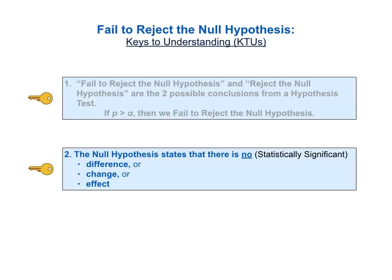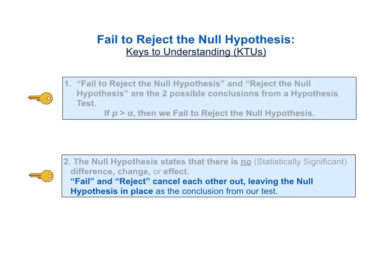Here's the first part of key to understanding number two: the null hypothesis states that there is no statistically significant difference, change, or effect. And here's the second part of KTU number two: fail and reject cancel each other out, leaving the null hypothesis in place as the conclusion from our test.